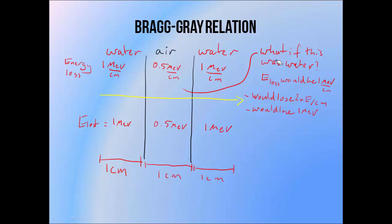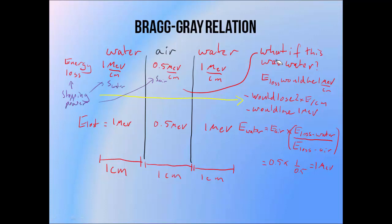Writing it out mathematically, if we replace the air in the middle region with water, the energy lost inside the middle region will be equal to the energy lost if it was still air, multiplied by the rate of energy lost per centimetre in water, divided by the rate of energy loss in air per centimetre. In this case that's the 0.5 MeV lost by the electron in the air, multiplied by the rate of energy loss in water (1 MeV per centimetre), divided by the rate of energy loss in air per centimetre (0.5 MeV per centimetre). This gives the result of 1 MeV. The name that we normally give to the rate of energy loss is the electron's stopping power. So writing the Bragg-Gray equation in a form closer to what you'd see in a textbook, the energy that would be deposited in water is equal to the amount of energy deposited in air, multiplied by the ratio of stopping powers for water and air.